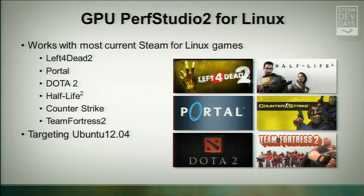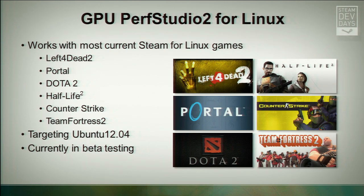Where are we right now? Perf Studio works with all of the Steam for Linux games that we've tested. We're targeting Ubuntu 12.04 initially, and may support other distributions as required. It's currently in beta test, and we expect it to be available at the end of Q1 2014. Expect more information on this at GDC.